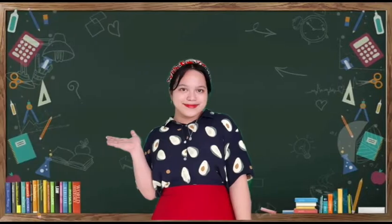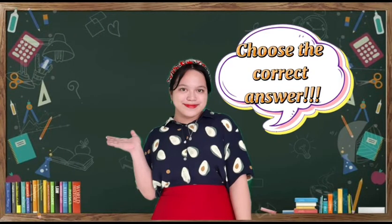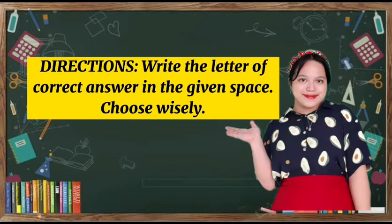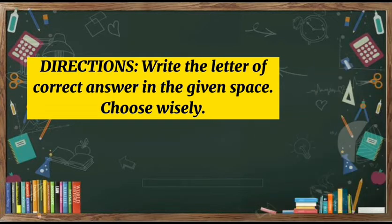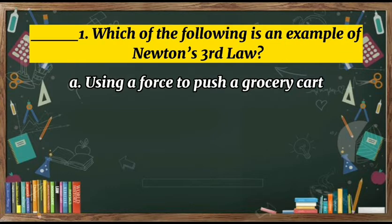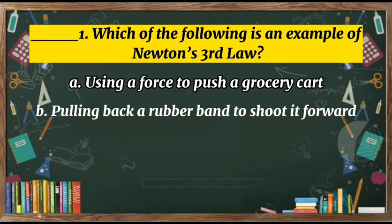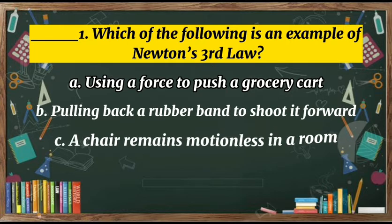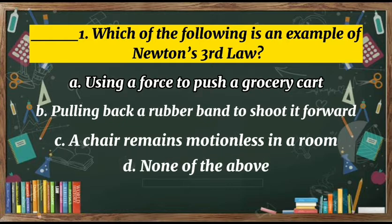I hope you are now ready for our quiz today. All you have to do is choose the correct answer. Write the letter of the correct answer in the given space. Choose wisely. Number one: Which of the following is an example of Newton's third law of motion? A. Using a force to push a grocery cart. B. Pulling back a rubber band to shoot it forward. C. A chair remains motionless in a room. D. None of the above.